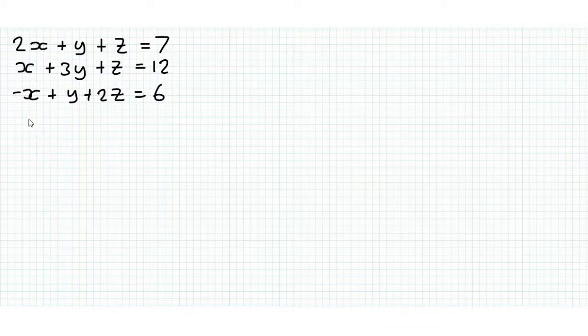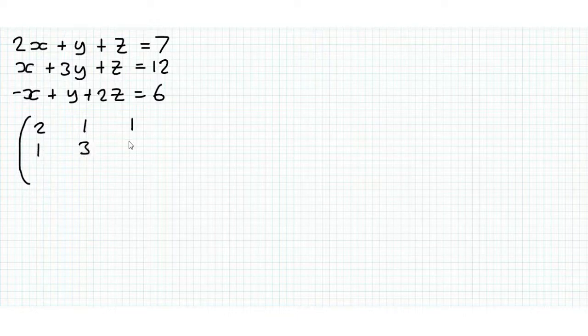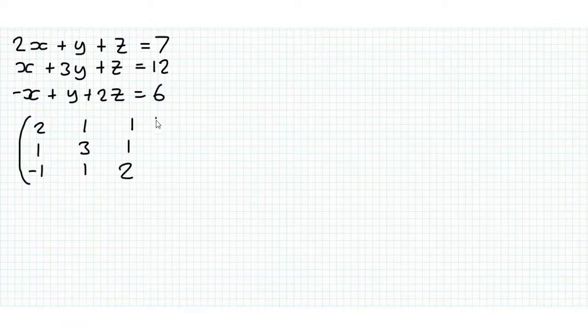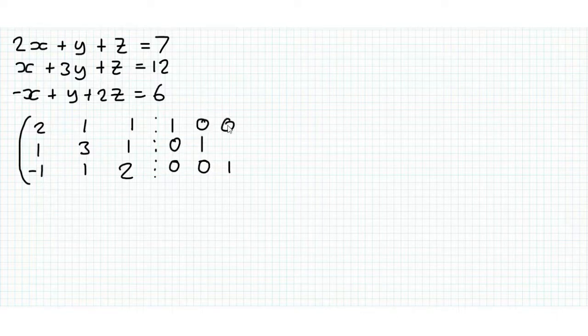We're going to write something called an augmented matrix, so we're going to write the coefficients: 2, 1, 1; 1, 3, 1; minus 1, 1, 2. And then we're just going to do this dotted line, and on the other side for this method we write the identity matrix of the size. This method works for a 2x2 matrix as well, but it's just quicker to find the inverse either way, whereas with 3x3 it's about the same.